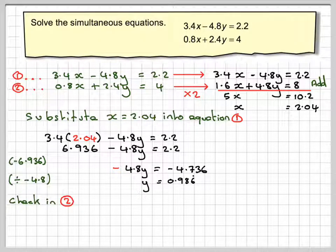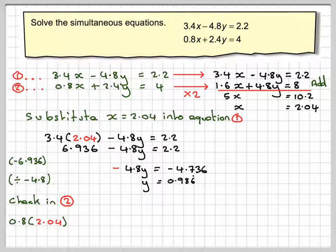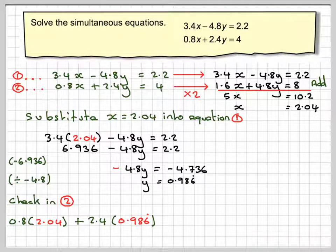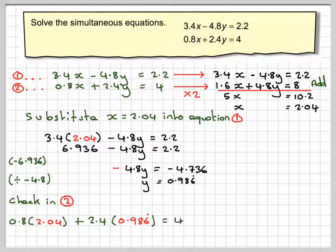So checking in equation 2. If we put 0.8 times 2.04 plus 2.4 times 0.986666, and we put that into our calculator, we do actually get 4.